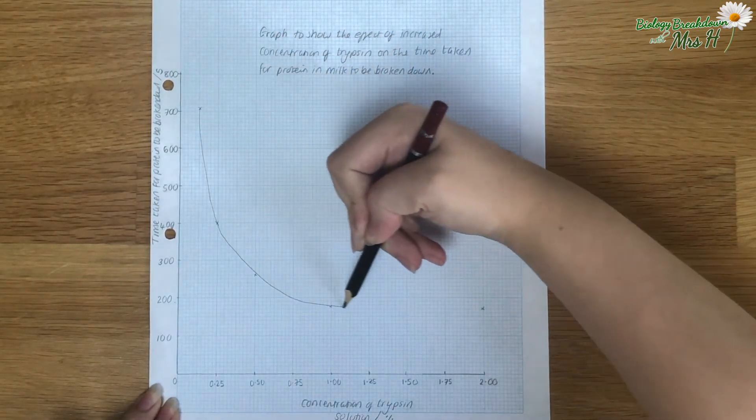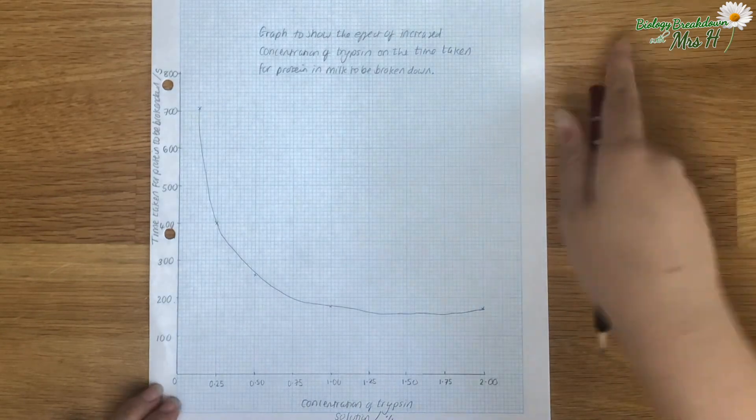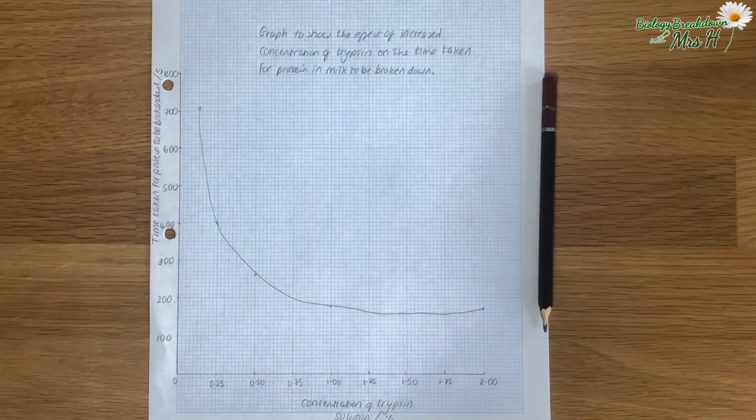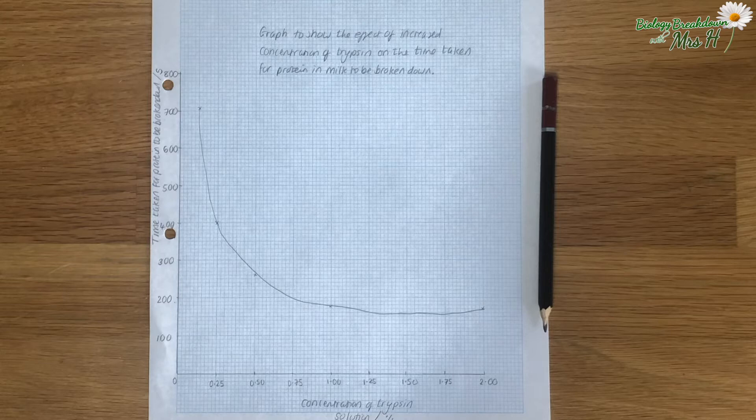Draw a line of best fit and that could be a curve or a straight line. It depends on what your data looks like it should be and here this data looks like a curve of best fit.